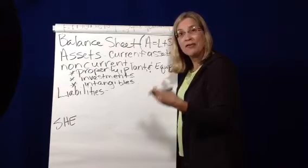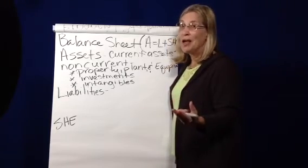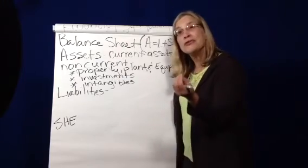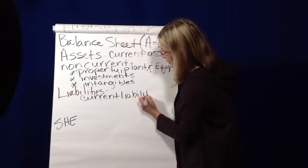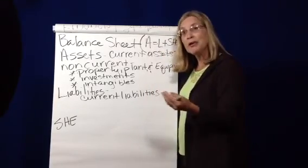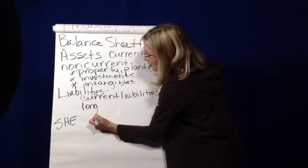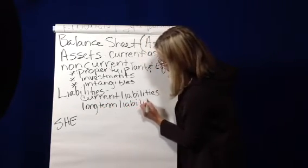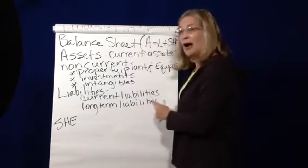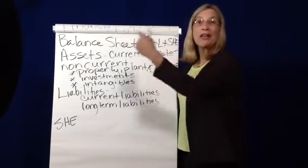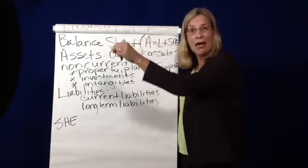Liabilities are responsibilities to others — those are your promises that you will fulfill at a future date. Liabilities either end in 'payable' or start with 'unearned.' There are two types: current liabilities, which include accounts payable — like your credit card bills where you bought something on credit that you'll pay later — and long-term liabilities, like student loans, car loans, or your mortgage, which you'll pay in more than a year from now.